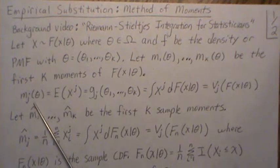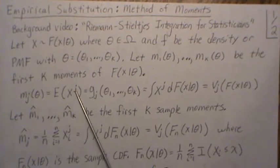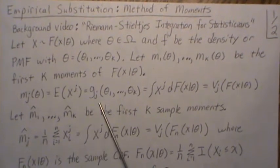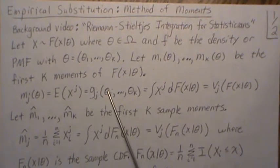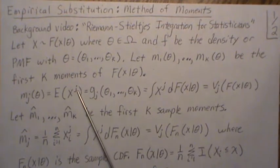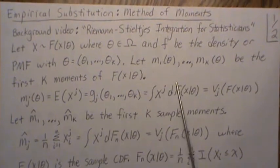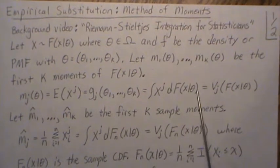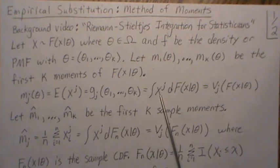The population moment is defined as this expected value of x raised to the j, and that can really be thought of as a function of the unknown parameters. This j just means it's the jth moment. In Riemann-Stieltjes notation it could be written like this as far as integration goes.